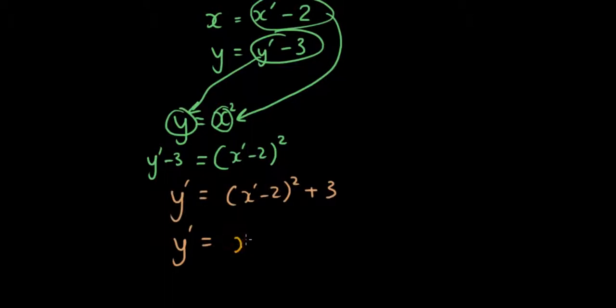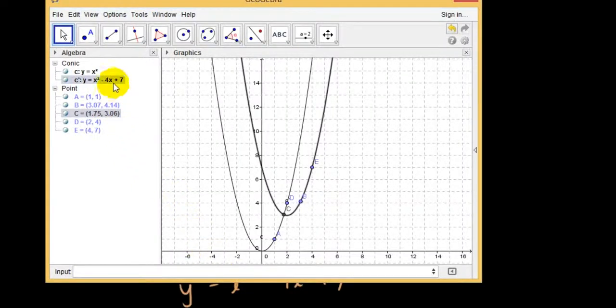Which will give me x' squared plus 4 minus 4x' plus 3 on the end, which will give me x' squared minus 4x' plus 7. And that is what the equation in GeoGebra equals.